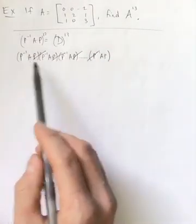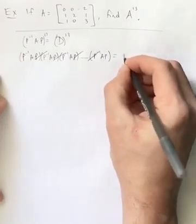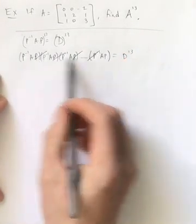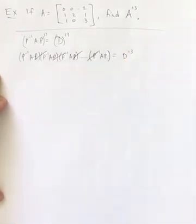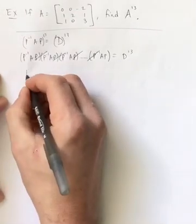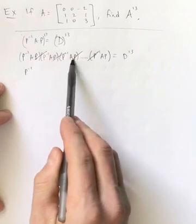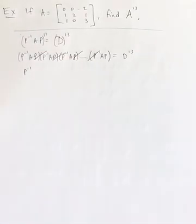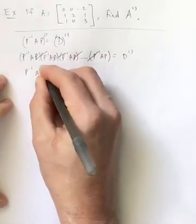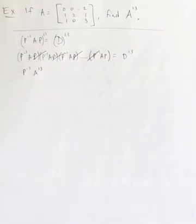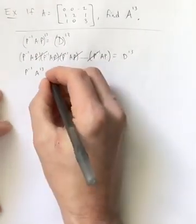So essentially all this stuff in the middle, and again this is equal to D to the 13th, all this stuff in the middle except for the A's cancels. Now I do have a P inverse at the beginning, but then I've got 13 copies of A. Once I cancel all the P's, I've got 13 copies of A that are adjacent, and then I've got this P at the end.